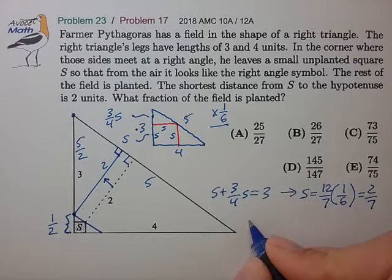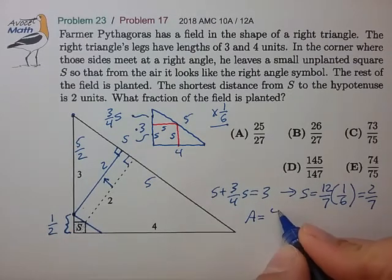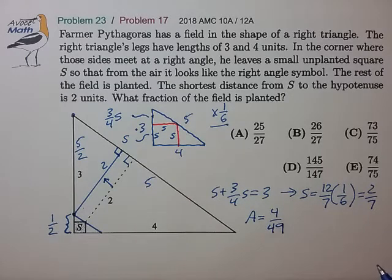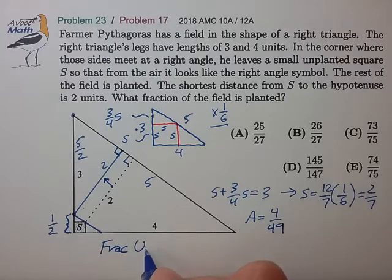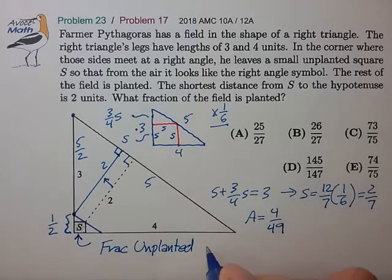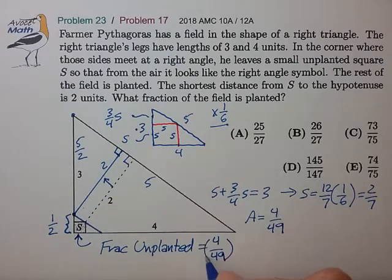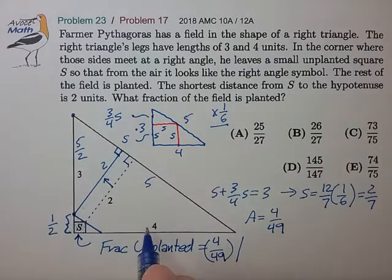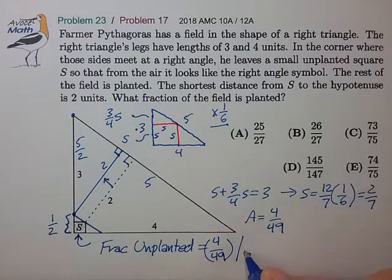Now once we know the side length, we know that the area is 4 over 49. And so we can figure out that the fraction that is unplanted, essentially the fraction of this square, is equal to 4 over 49 divided by the area of the entire triangle. That's 4 times 3 divided by 2, which is 6.